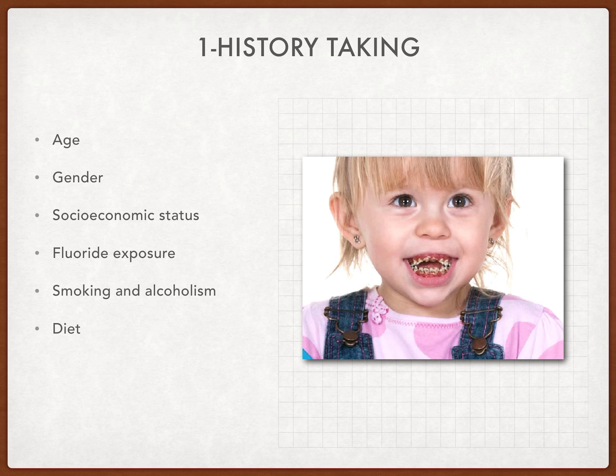Smoking and alcoholism also play a role because they affect the quantity and quality of bacteria present in the oral cavity. Nicotine delays the remineralization of tooth structure, and these habits also affect the salivary flow rate, which ultimately influences the carious lesion process.